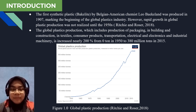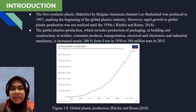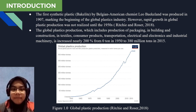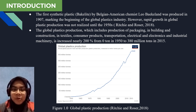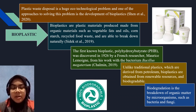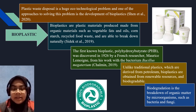The first synthetic plastic was produced in 1907 and this plastic, called Bakelite, was the beginning of the global plastic industry. However, global plastic production did not rapidly grow until 1950, and the global plastic production increased rapidly nearly 200% from 0 tons in 1915 to 380 million tons in 2015. The global plastic production increase means that plastic waste also increased. The plastic waste disposal has become an ecological problem in our earth today, and one push to solving this problem is by the development of bioplastics.